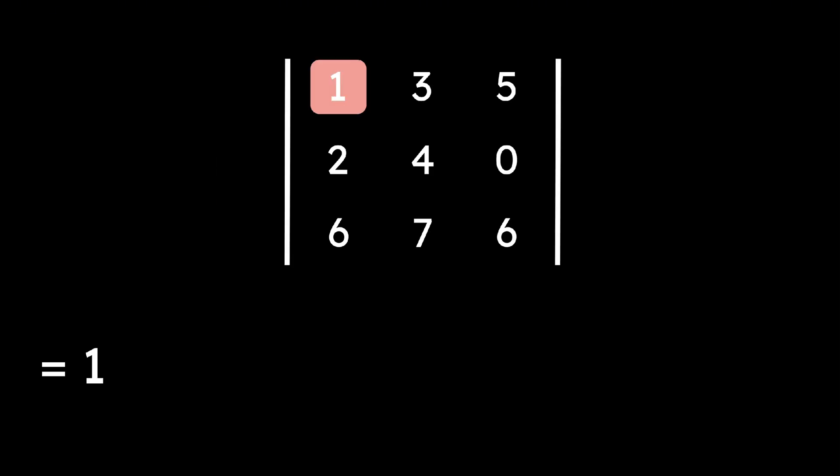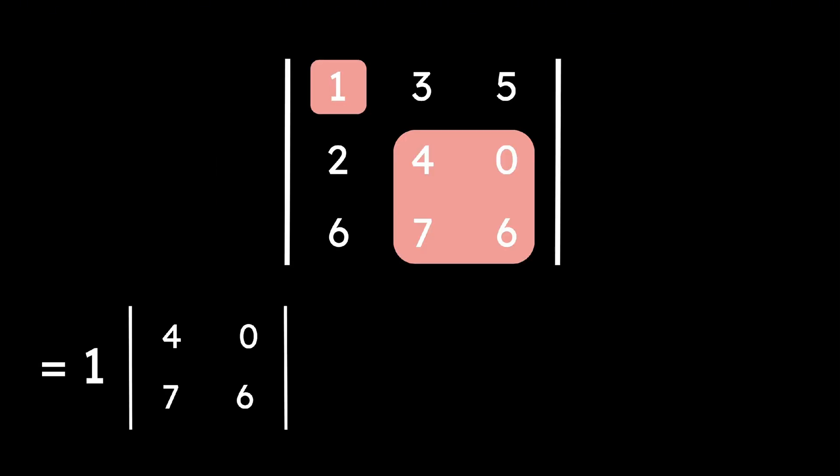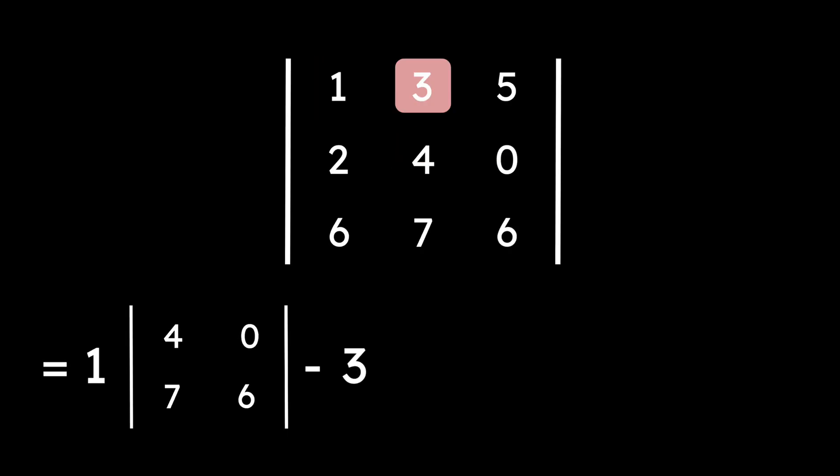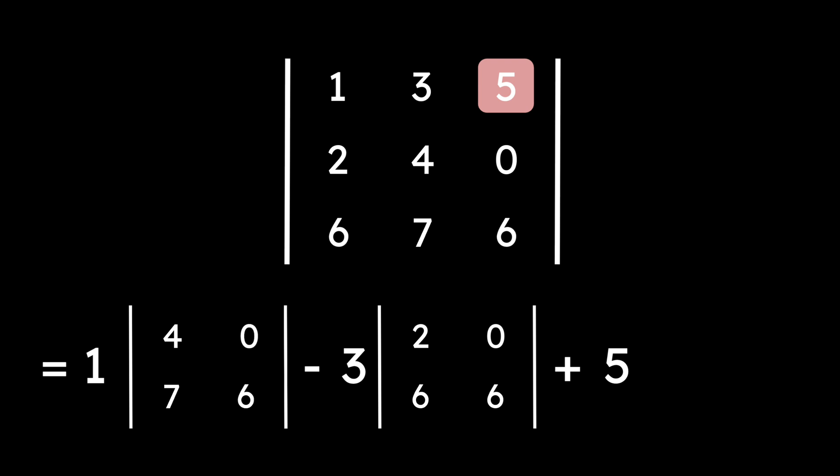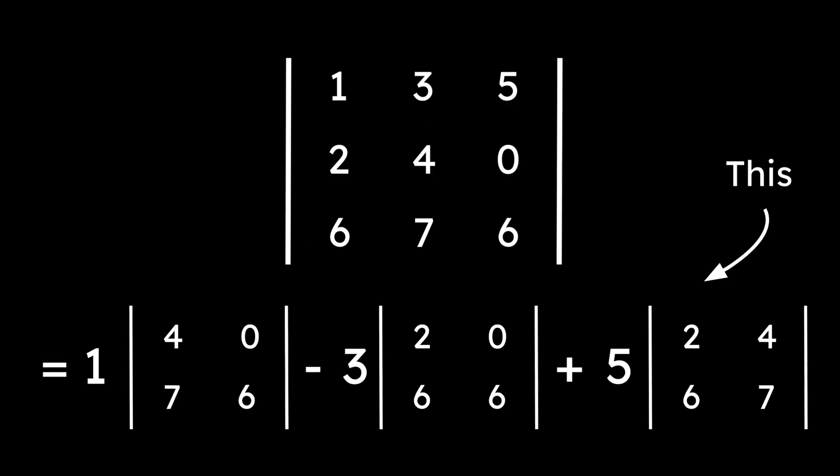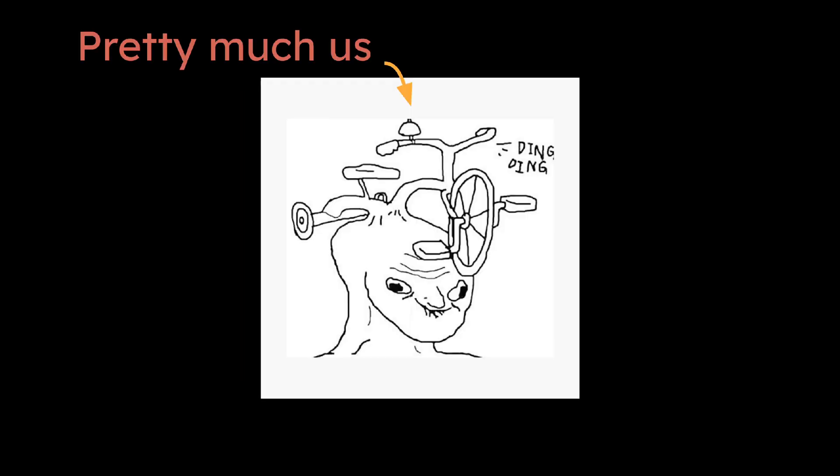Now for a 3x3 matrix, it's slightly more complicated. We take this element and multiply by the determinant of this matrix, subtract this element times the determinant of this matrix. Finally, add this element multiplied by this determinant. From this, you get the determinant. Bigger determinants require more complicated methods, which are too smart for us.